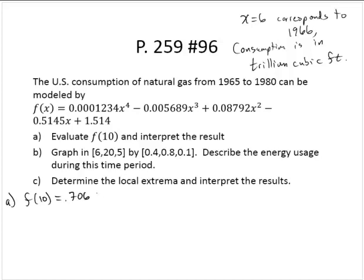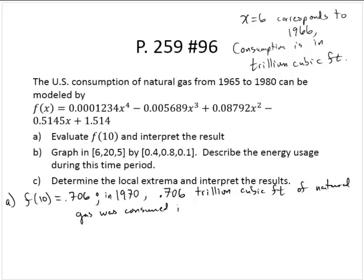All right. So what does that tell us? Interpret the result. If x equals 6 corresponds to 1966, then x equals 10 would correspond to 1970. In 1970, 0.706 trillion cubic feet of natural gas was consumed in the United States.